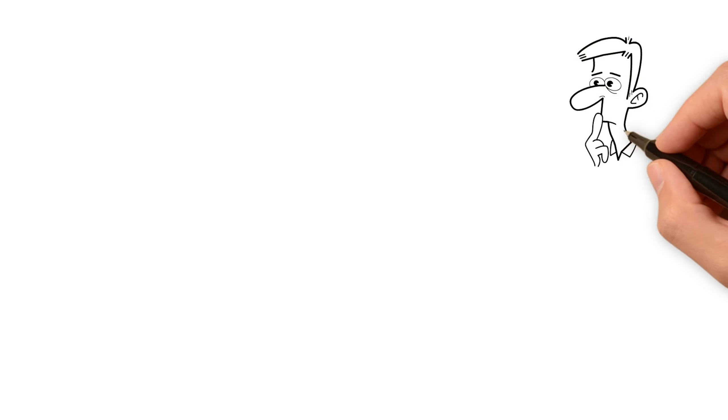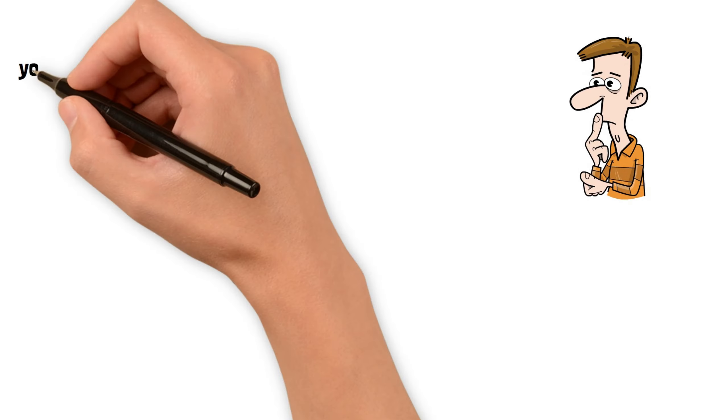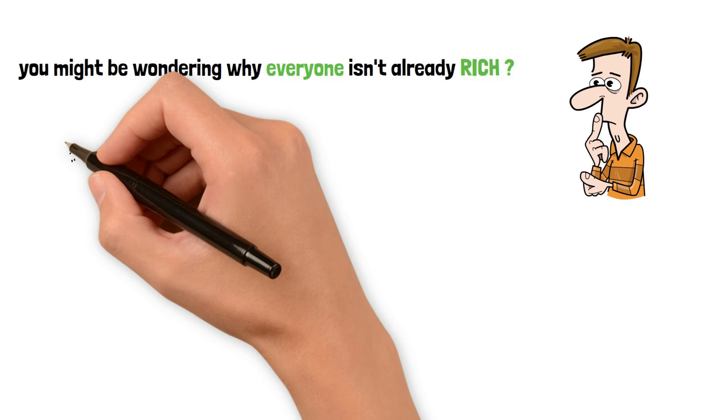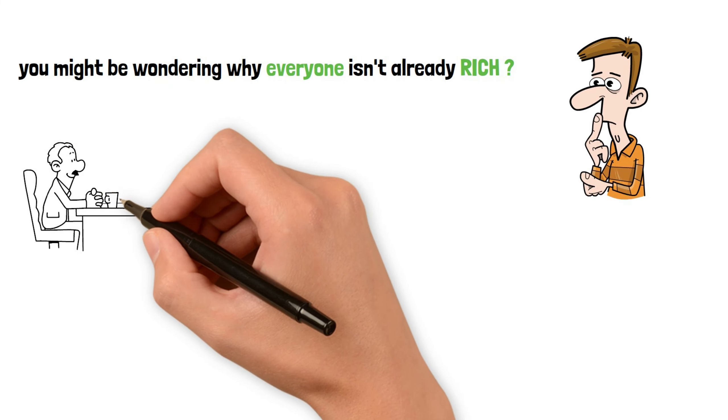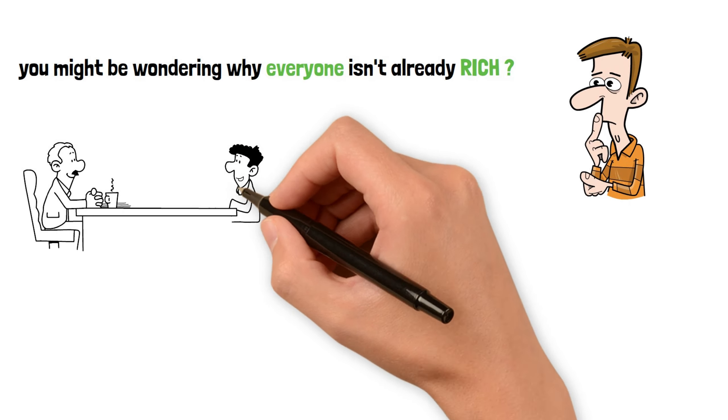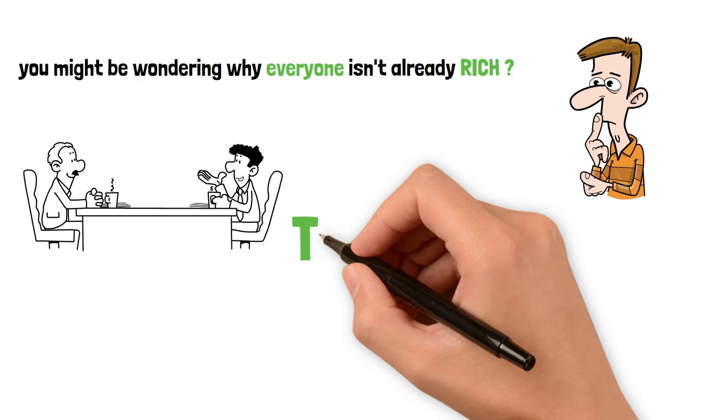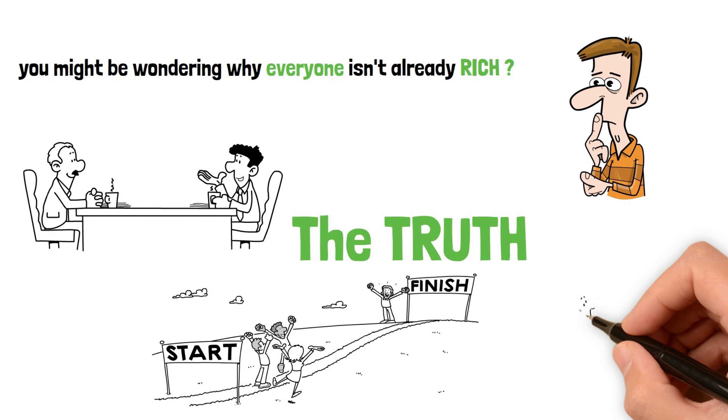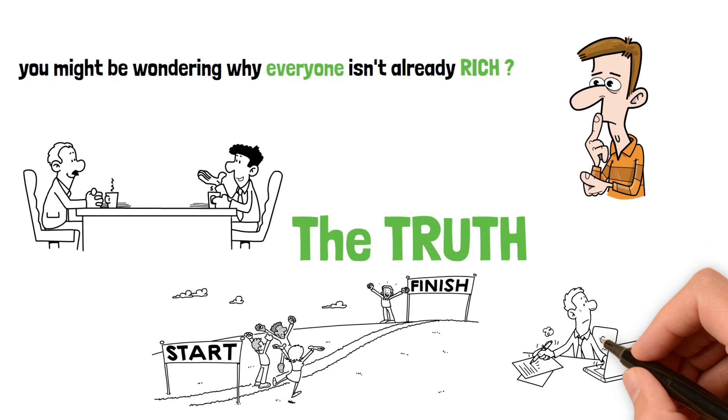But you might be wondering why everyone isn't already rich, or why it's nearly impossible for 99.9% of the population to retire early. That's what we'll be discussing today. The truth is, most people don't know where to start and don't have the resources available to stick with it long enough to make it work.